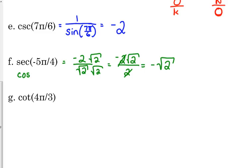One more, cotangent of 4π over 3. Okay, cotangent is the reciprocal of tangent. Well, if tangent is sine over cosine, that means the reciprocal is going to be cosine over sine. Tangent was sine over cosine, so that means cotangent, its reciprocal, is cosine over sine.